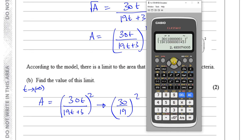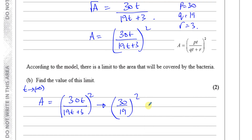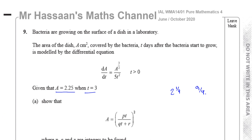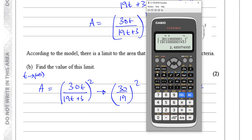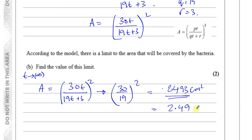So 30 × 1,000,000 over 19 × 1,000,000 plus 3, all squared, gives 2.493. The understanding way of doing it: as t gets really, really big, the plus 3 has negligible effect. So the expression tends towards (30/19)², which is 900/361, approximately 2.49 centimetres squared. To 3 significant figures, the limit is 2.49 cm².